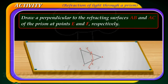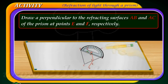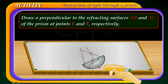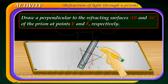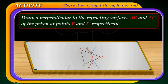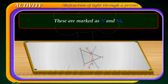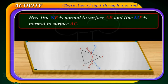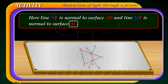Now draw a perpendicular to the refracting surfaces AB and AC of the prism at points E and F respectively, marking 90-degree angles. Name them N and M. Line NE is the normal to surface AB, and line MF is the normal to surface AC.